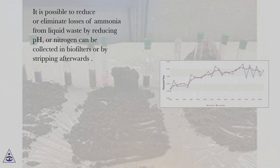It is possible to reduce or eliminate losses of ammonia from liquid waste by reducing pH, or nitrogen can be collected in biofilters or by stripping afterwards.